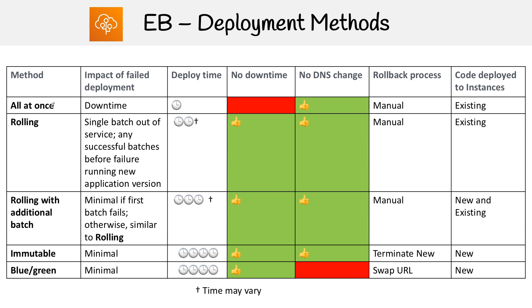The first one is all-at-once. It has the fastest deploy time because it updates all the servers at the exact same time. So if we have four servers, it takes them out of service, applies the updates, and puts them back into service. But when they're out of service, we're going to experience downtime, which could impact users or critical transactions.